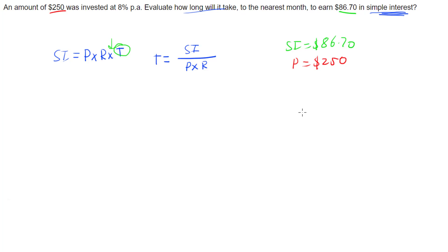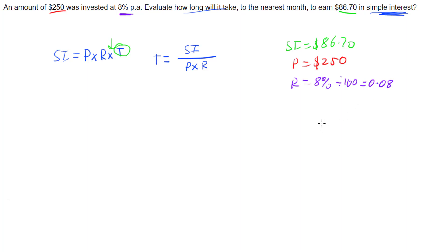We have our rate of 8% per annum, but our rate needs to be a decimal, so we divide that by 100, which gives us a rate of 0.08 for our formula.